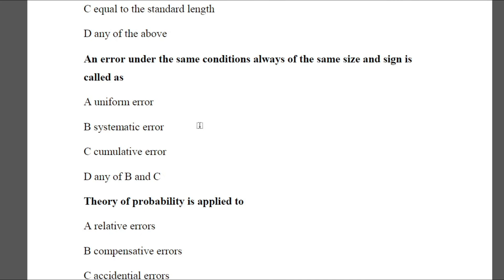Question 18: An error occurring under the same conditions, always of the same size and sign, is called — Option A: uniform error, Option B: systematic error, Option C: cumulative error, Option D: any of B and C. The answer is D — any of B and C (systematic or cumulative error).